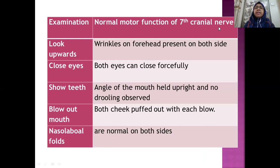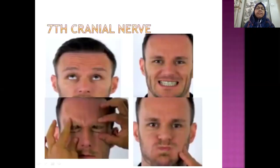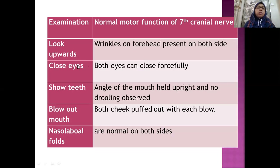Normal motor function of the seventh cranial nerve: tell the patient to look upward or raise the eyebrows — wrinkles on the forehead present on both sides. Close the eyes as forcefully as possible; both eyes close and you cannot open them. Show the teeth — the angle of the mouth is held upright and no drooling is observed. Blow out the mouth — both cheeks puffed out. Nasolabial folds are normal and symmetric on both sides.